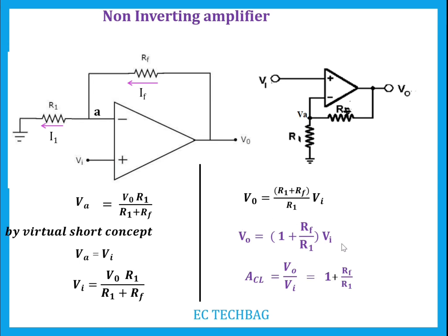In this output expression there is no negative sign, which implies that the output voltage is in phase with the input voltage — there is no phase difference between input and output. So for the non-inverting amplifier, the gain is 1 plus Rf/R1. This completes the first method of deriving the output expression.